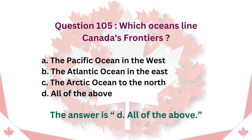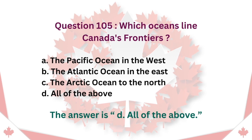Question 105: Which oceans line Canada's frontiers? A. The Pacific Ocean in the West. B. The Atlantic Ocean in the East. C. The Arctic Ocean to the North. D. All of the above. The answer is D. All of the above.